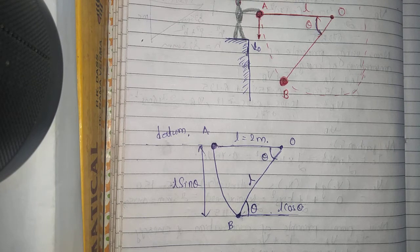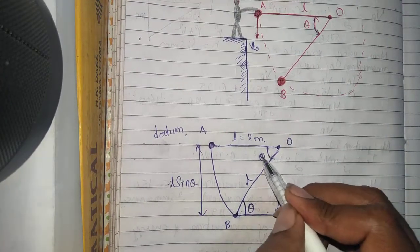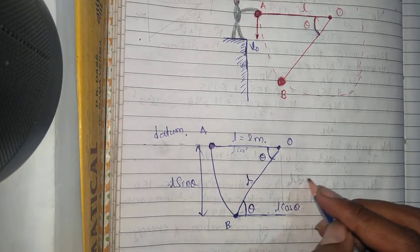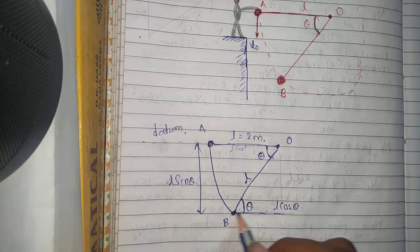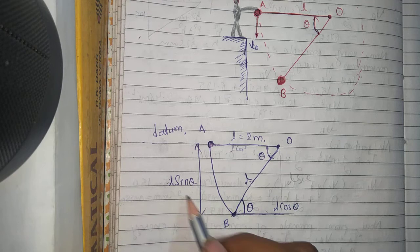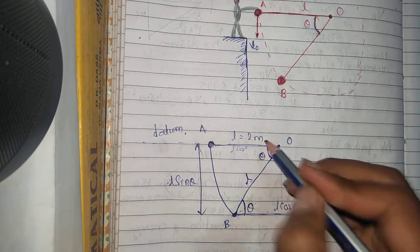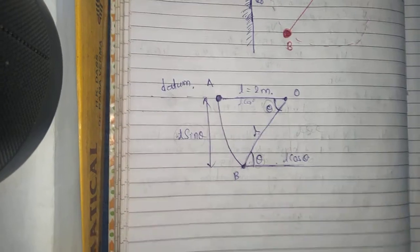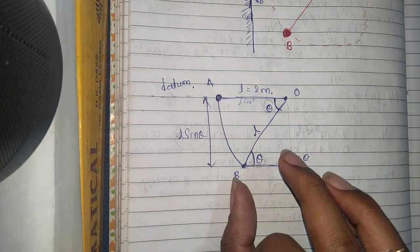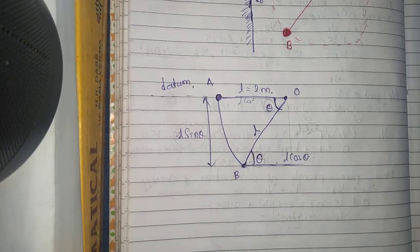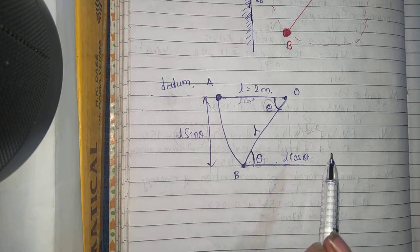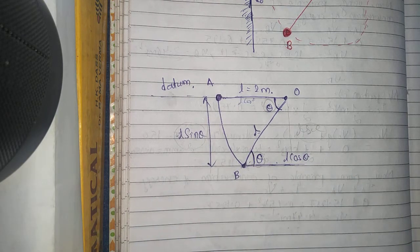Since this angle is theta, the cosine component of the length is L cos theta in the horizontal direction, and L sin theta is in the vertical direction. We should be very careful here — this is the most confusing part. We must not mix up which side is the cosine component and which is the sine component, or our answer will be wrong.